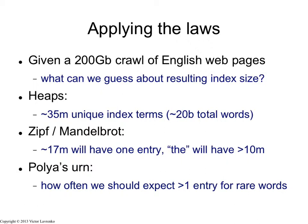So this is giving some space for things like spaces, punctuation, and all the other stuff that will occur in English. So assuming that I have about 20 billion words, what does Heaps' law tell me? Heaps' law tells me that I will probably have about 35 million distinct indexing terms. So that's going to be the size of my index for this crawl — 35 million entries, give or take. That's assuming I know the constants, assuming I fit them somehow.